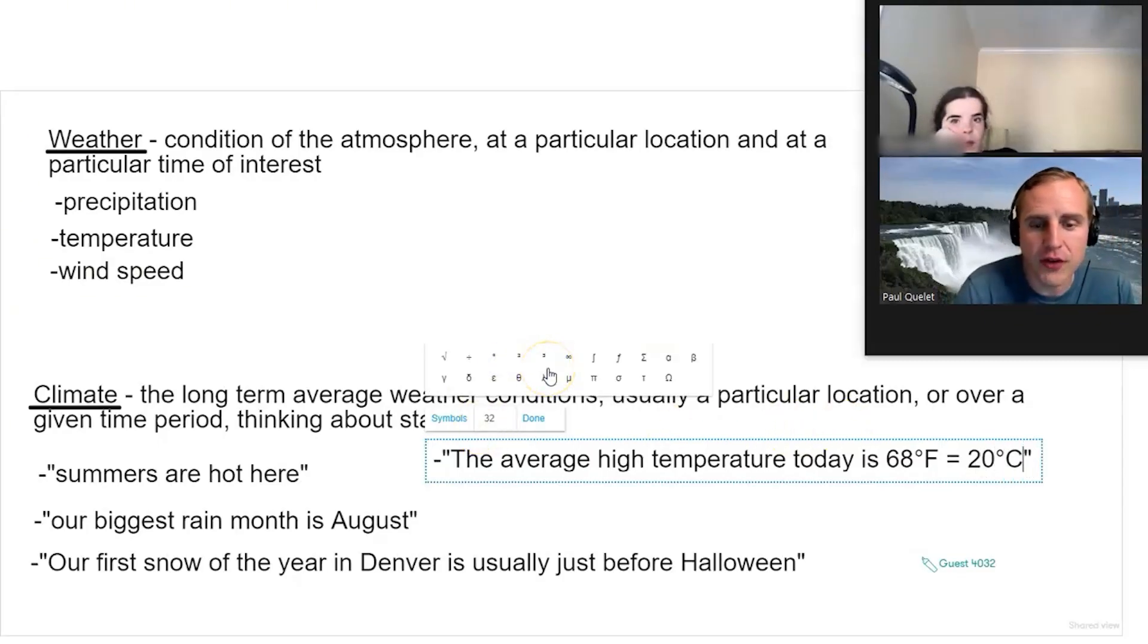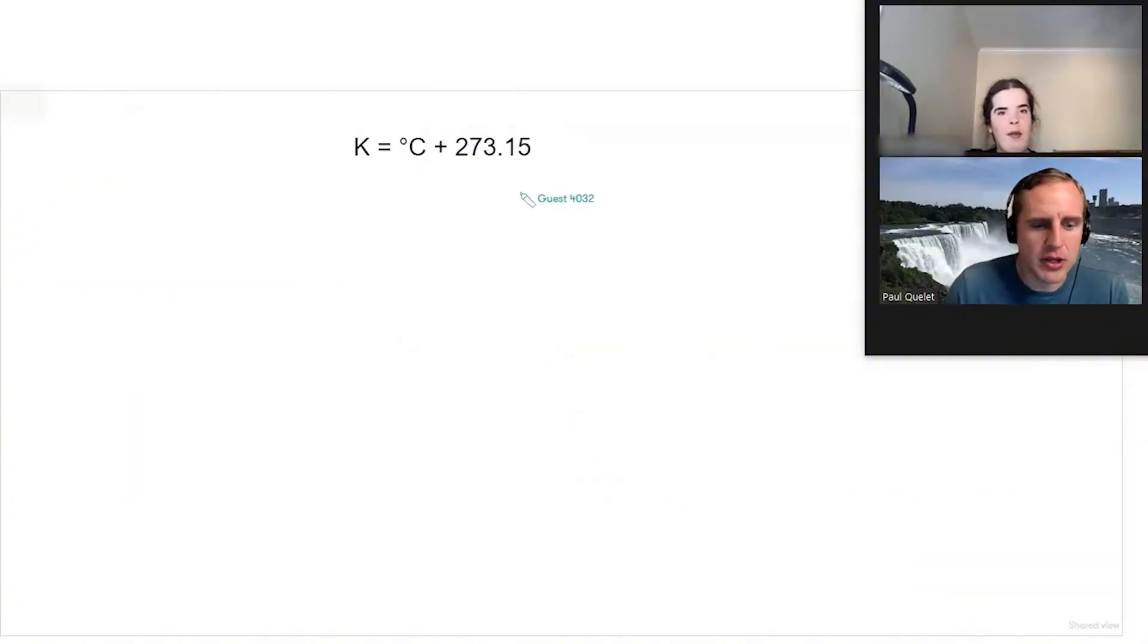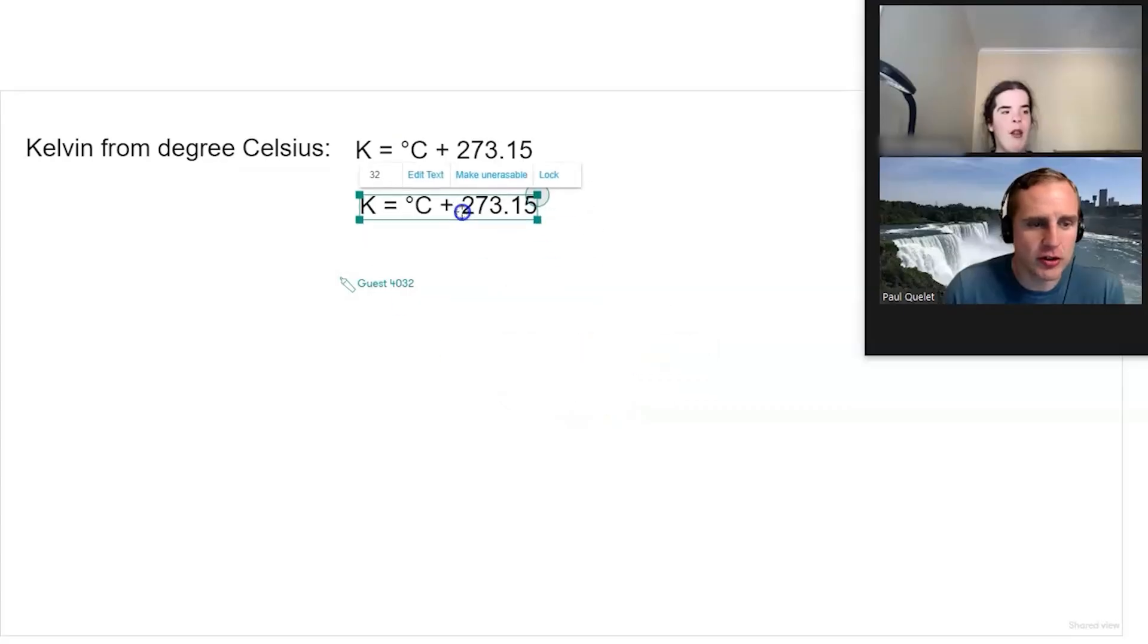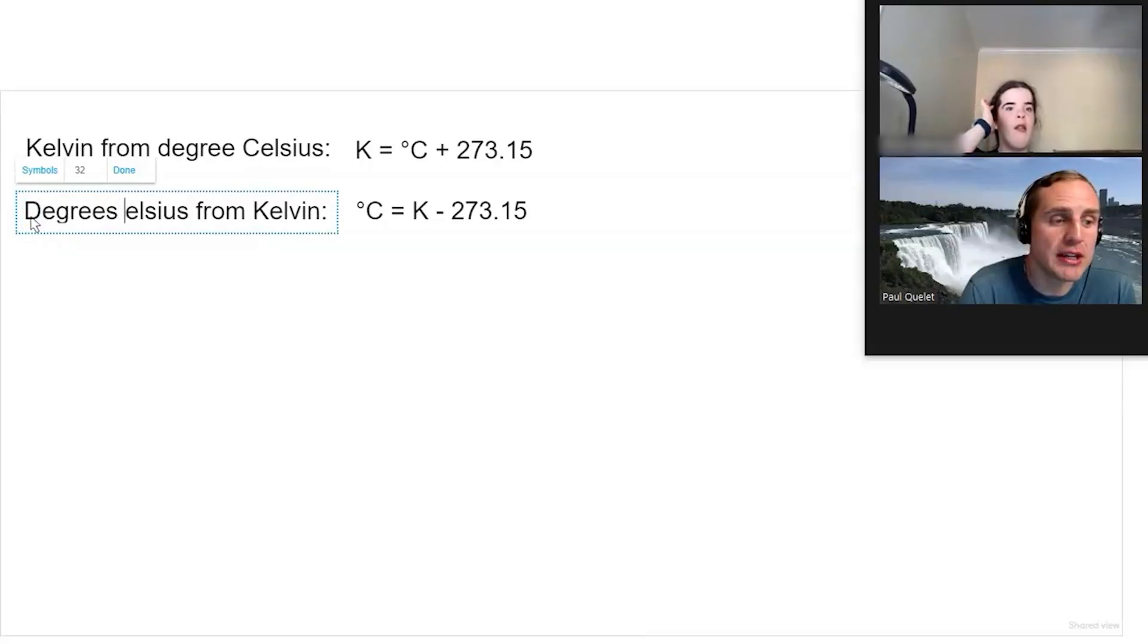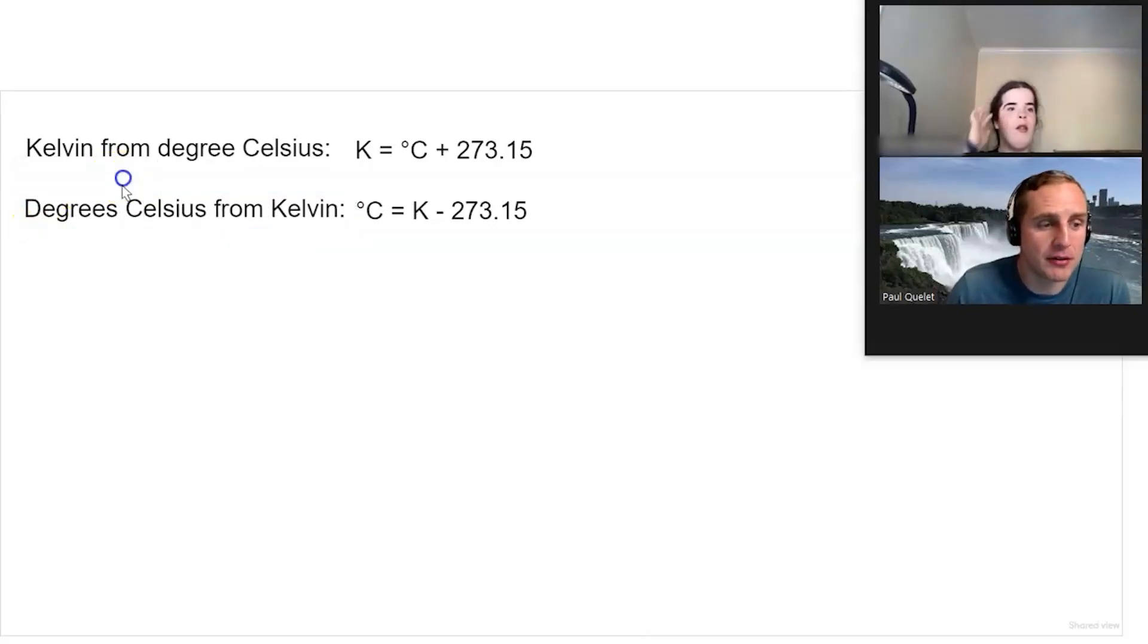Do we always use Fahrenheit in meteorology or do we sometimes use Celsius? So this is how you get Kelvin from degrees Celsius. You just take this equation and solve for degrees Celsius. By the way, did I use the word degrees when I talked about Kelvin? That was intentional. Do you have any idea why?